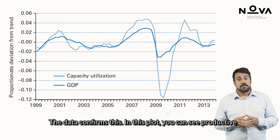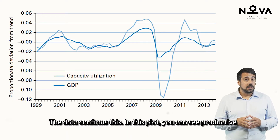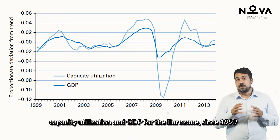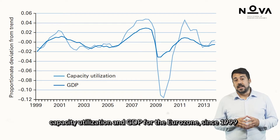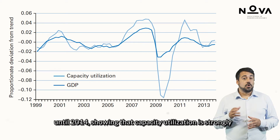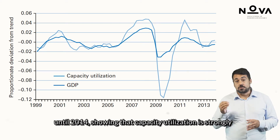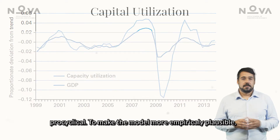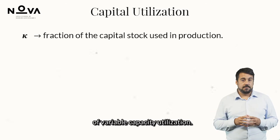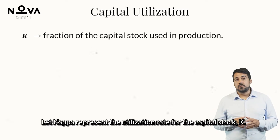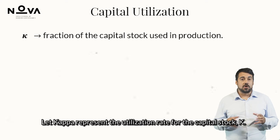The data confirms this. In this plot, you can see productive capacity utilization and GDP for the Eurozone since 1999 until 2014, showing that capacity utilization is strongly pro-cyclical. To make the model more empirically plausible, we will now extend our framework to include the possibility of variable capacity utilization. Let Kappa represent the utilization rate for the capital stock, K.